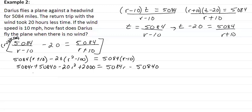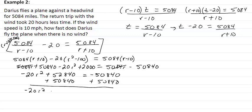Now we need to combine some like terms, and we're going to get negative 20r squared. Our 5,084r's are going to disappear, and this is going to equal negative 50,840. So now we add 50,840 to both sides, and we're going to get negative 20r squared plus 103,680 equal to zero. We'll divide everything by negative 20 and we're going to get r squared minus 5,184 equal to zero.